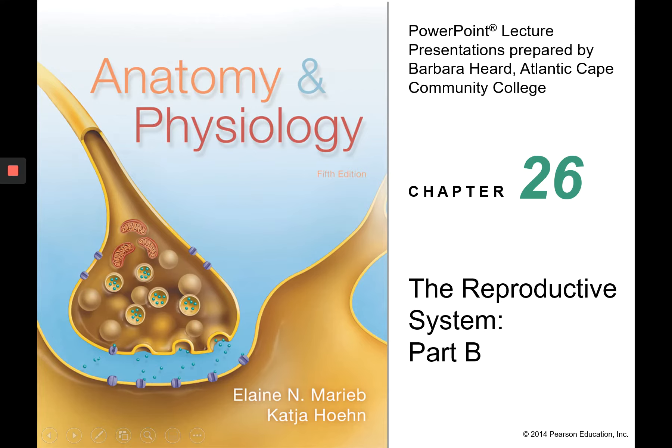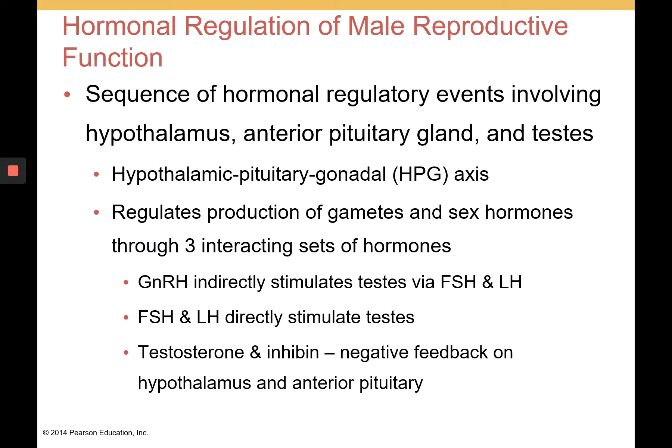We're looking at chapter 26, part B of the reproductive system, focusing on the hormonal regulation of the male reproductive system. This involves a sequence of hormonal regulatory events involving the hypothalamus, the anterior pituitary gland, and the testes — called the hypothalamic-pituitary-gonadal axis, or HPG axis. It regulates the production of gametes and sex hormones through three interacting sets of hormones, beginning with gonadotropin-releasing hormone, which indirectly stimulates the testes via the release of follicle-stimulating hormone and luteinizing hormone from the anterior pituitary. FSH and LH are called gonadotropins and directly stimulate the testes.